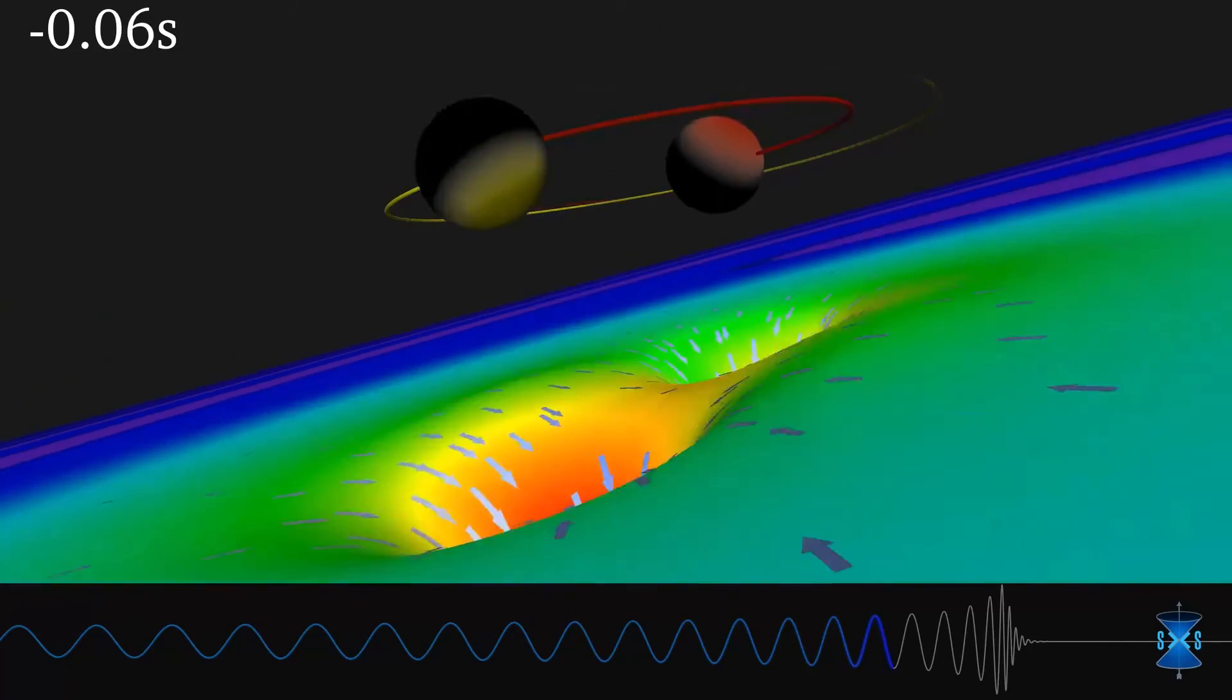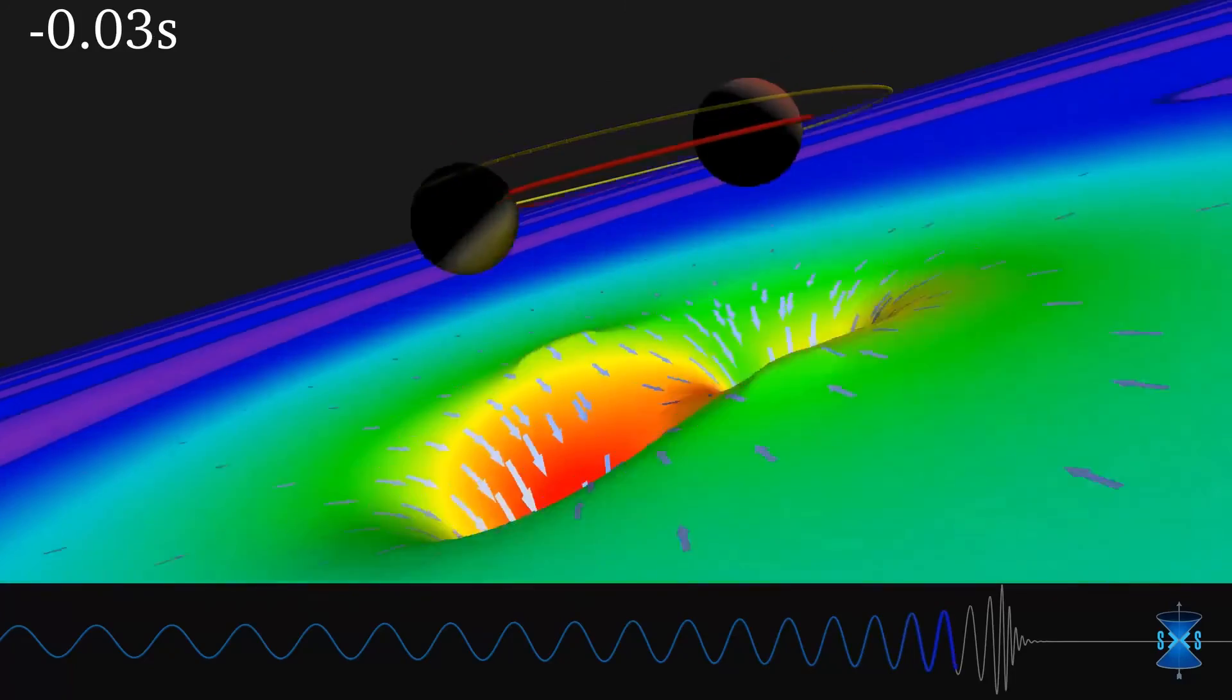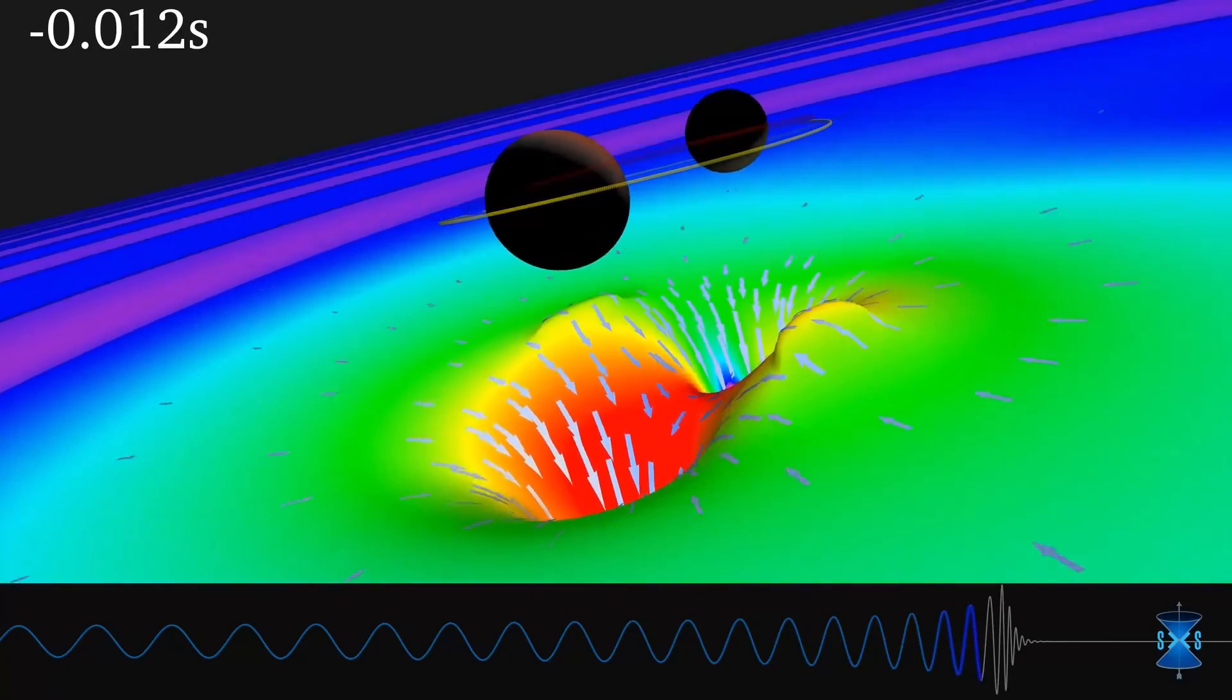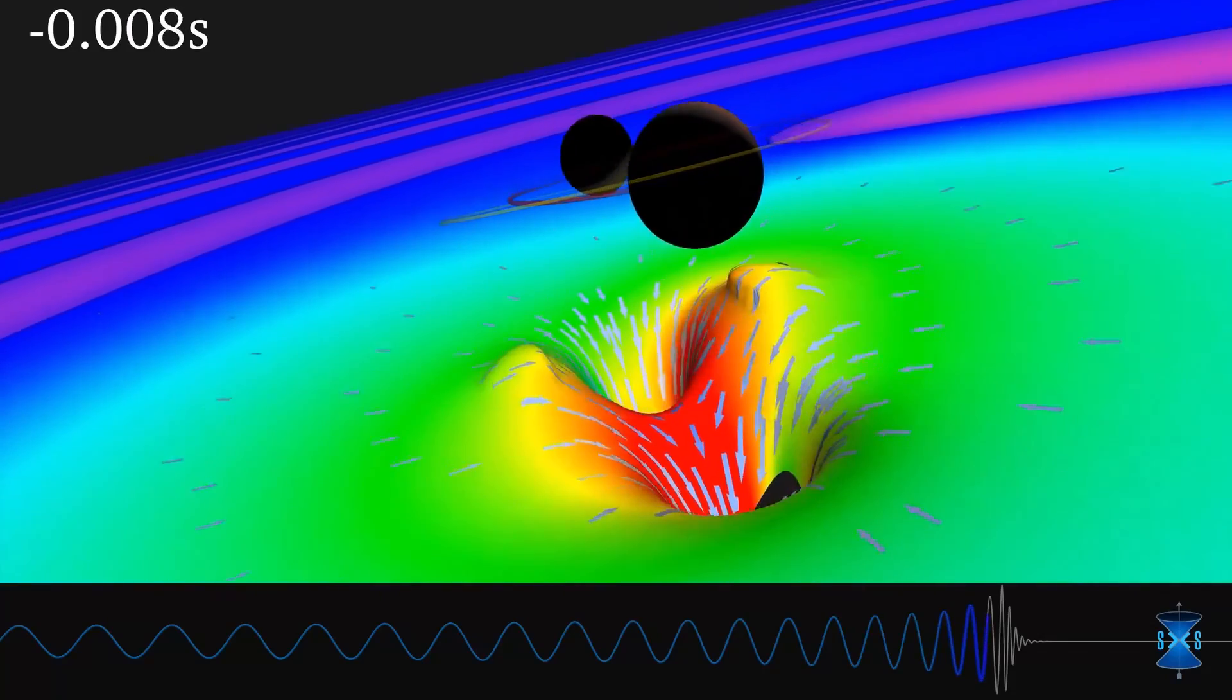The moment they merged took 0.2 seconds. They turned into a single black hole of 62 sun masses.